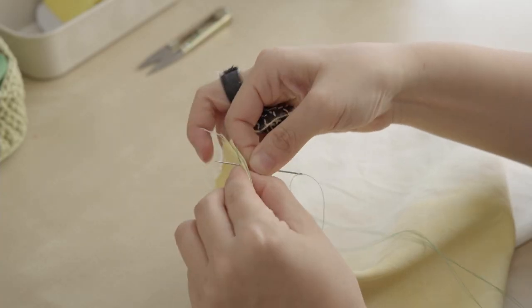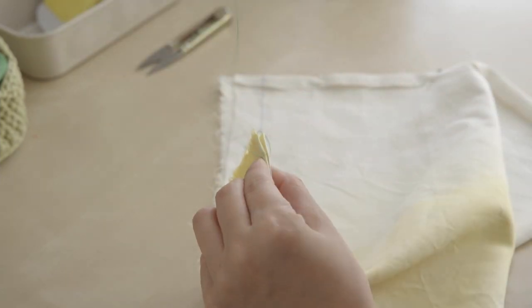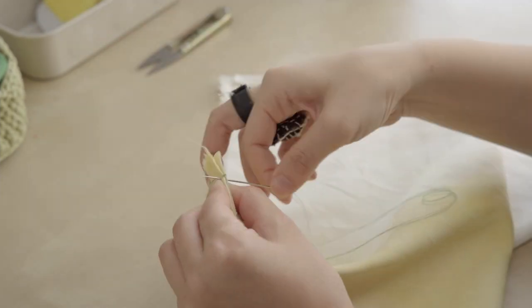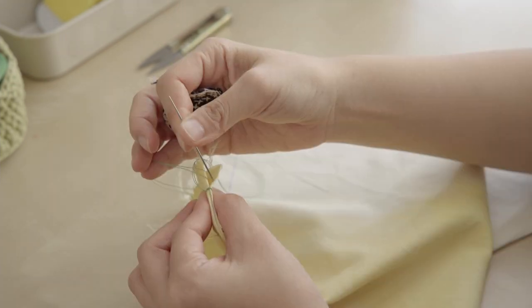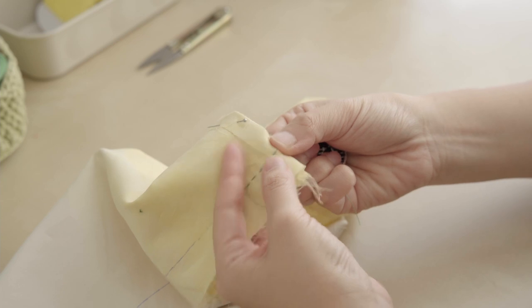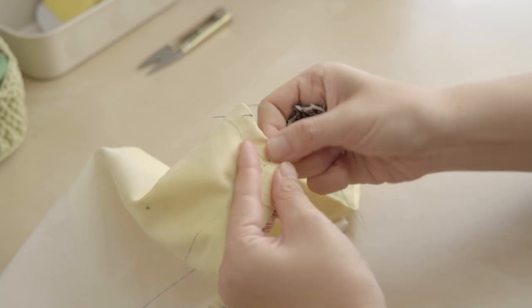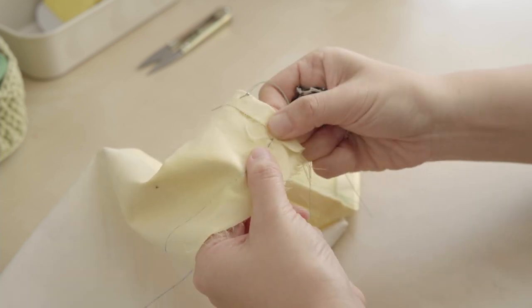Make a couple of back stitches here to hold the two pieces of fabric together. Then, sew towards the other end, covering the existing stitches.